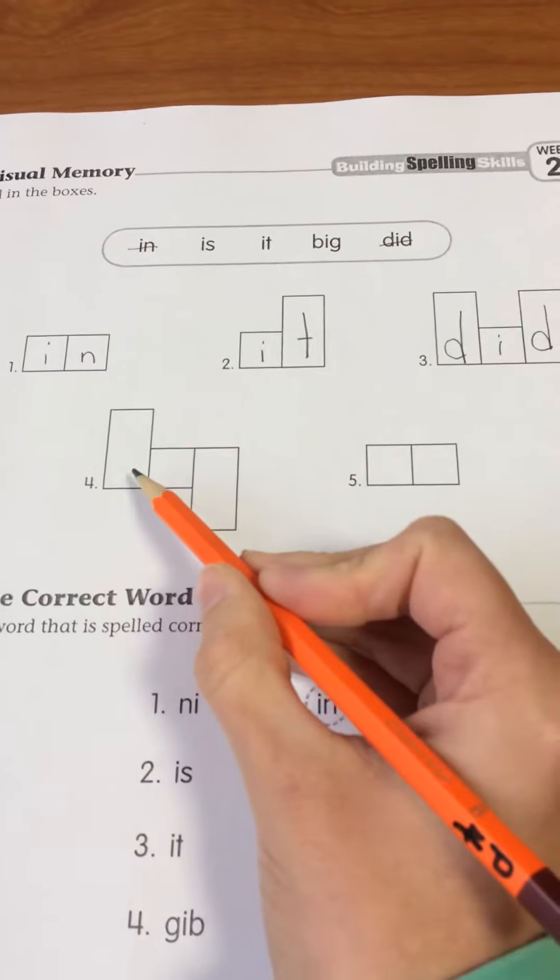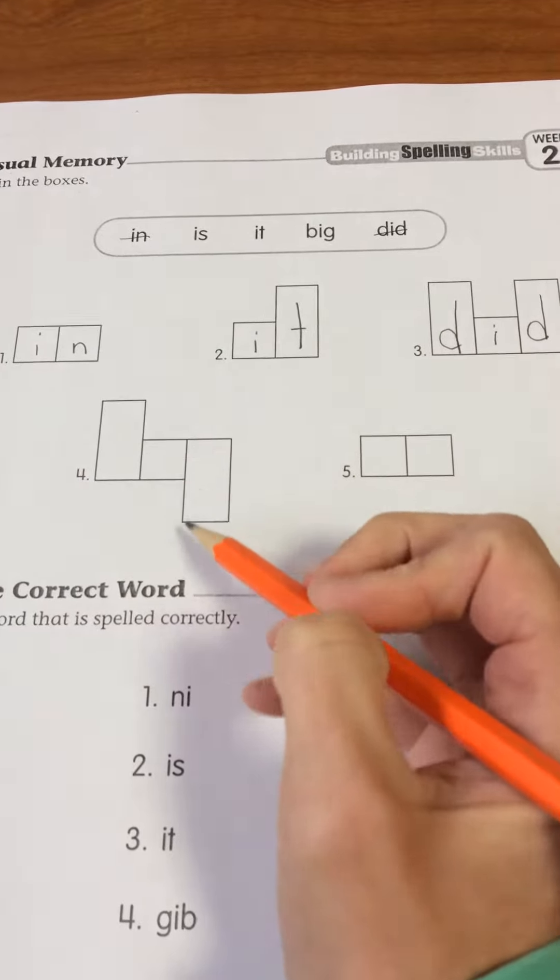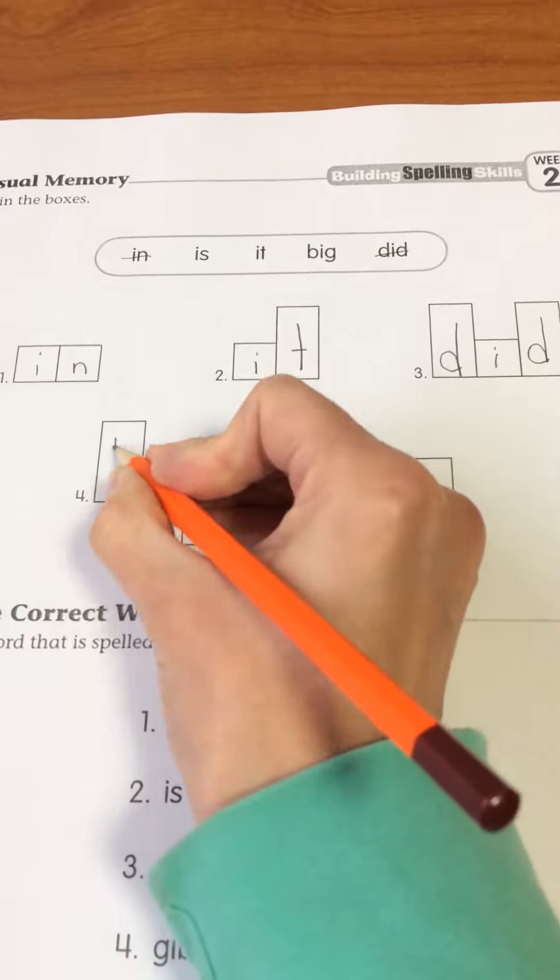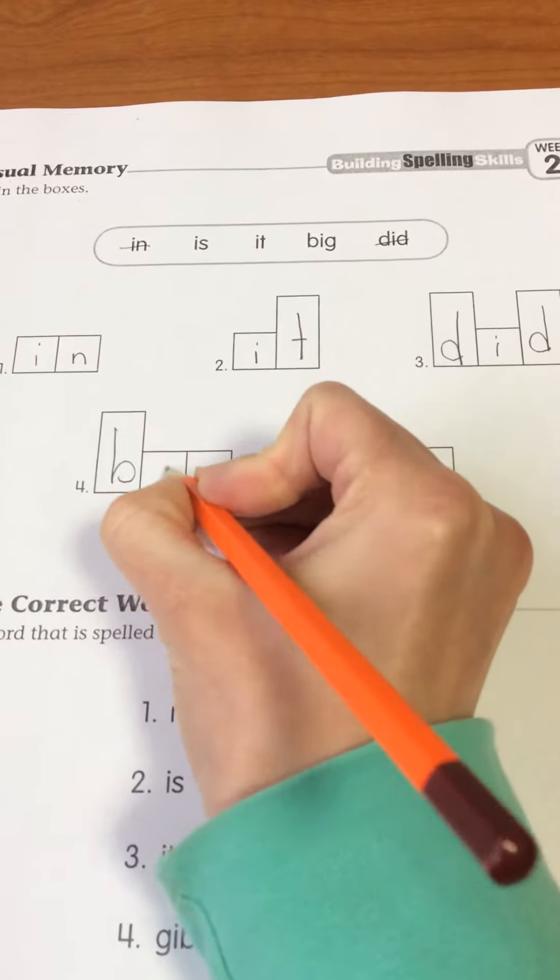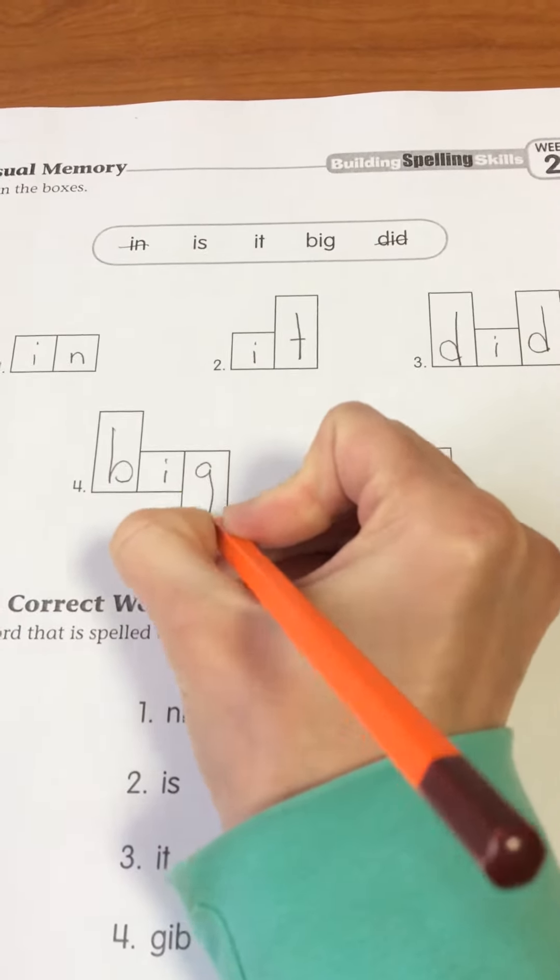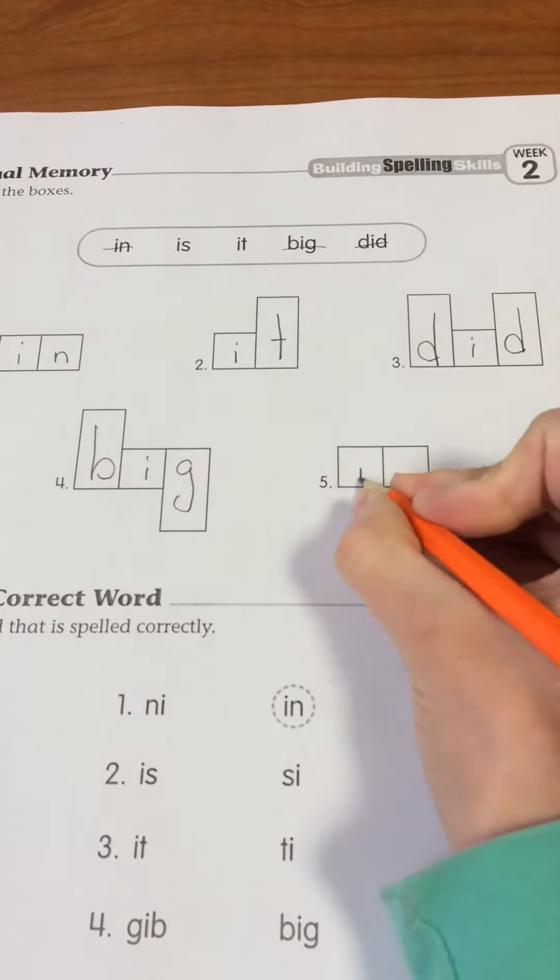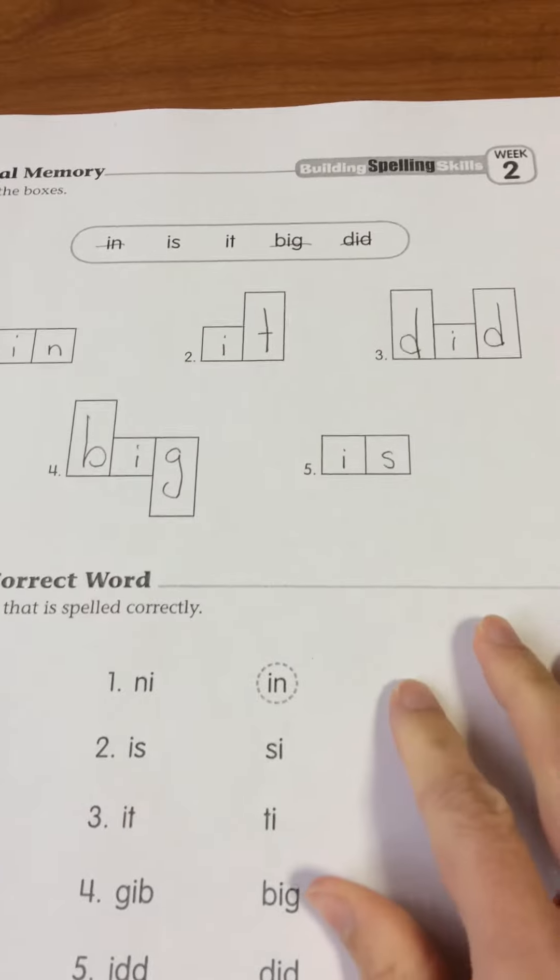Number four has one tall letter, one short letter, and then one long letter, which should go for big. So B, I, G. And our last one, two short letters, so I, S, is.